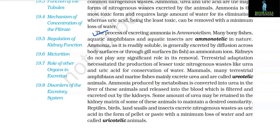Mammals, many terrestrial amphibians, and marine fishes mainly excrete urea and are called ureotelic animals. Ammonia produced by metabolism is converted into urea in the liver of these animals and released into the blood, which is filtered and excreted out by the kidneys.